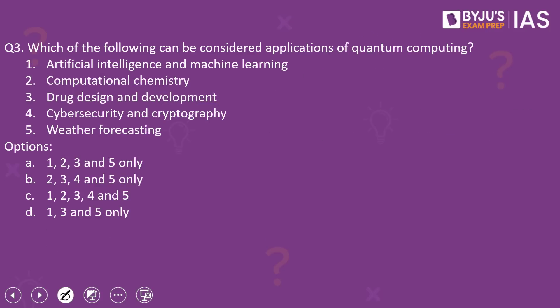Moving on to the third question: which of the following can be considered applications of quantum computing? The five points given are: artificial intelligence and machine learning, computational chemistry, drug design and development, cyber security and cryptography, and weather forecasting. Please have a look at the options given.